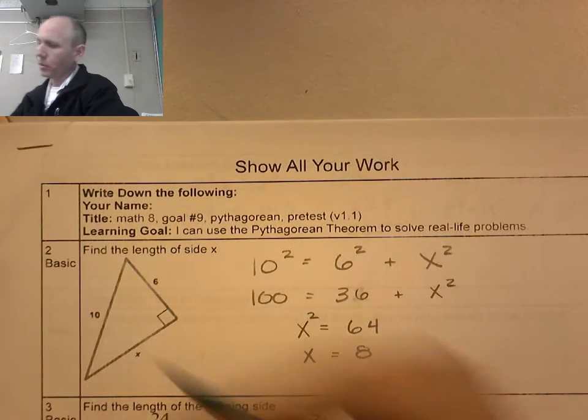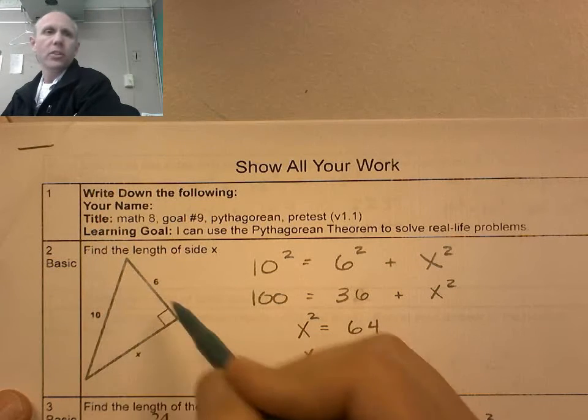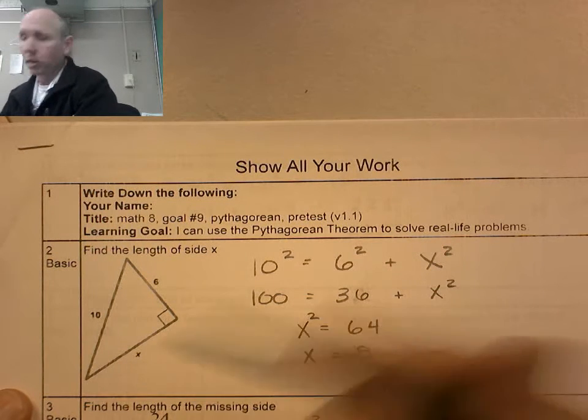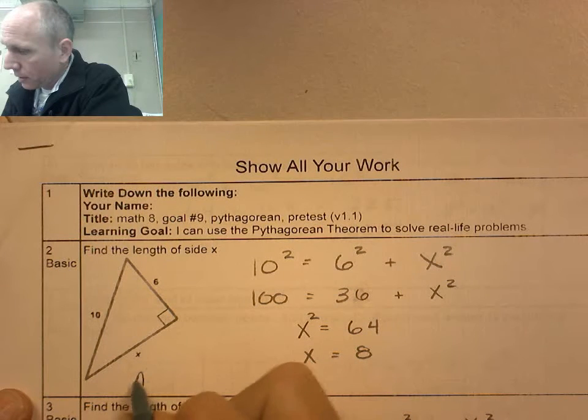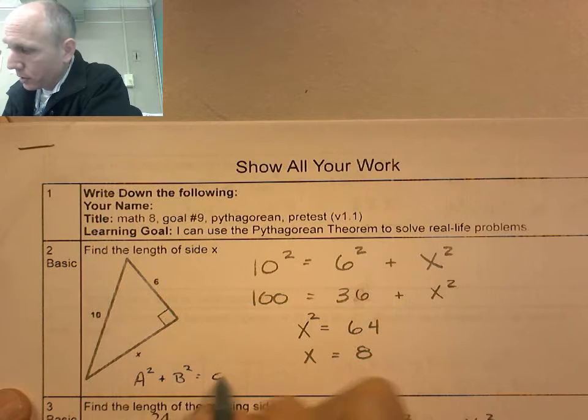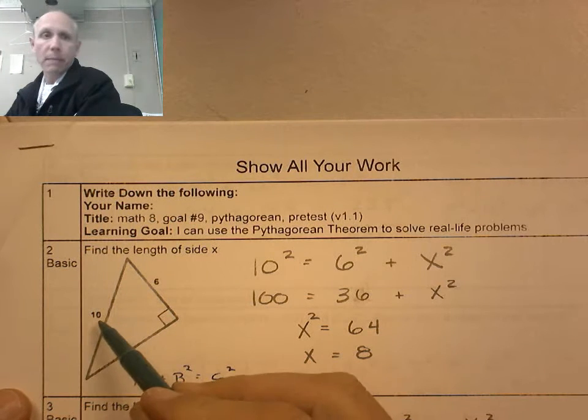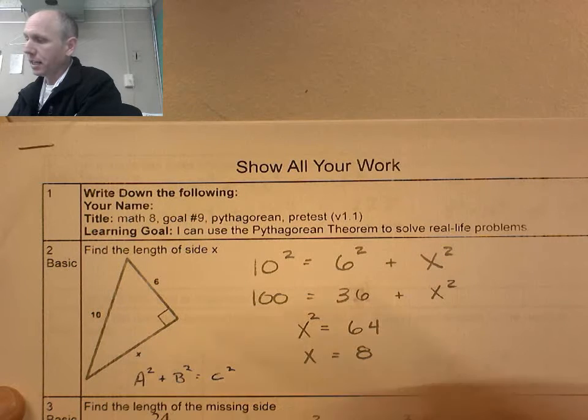Alright, Pythagorean Theorem. We use it for right triangles. This is a right triangle. If we have any of the two sides, we can find the third side using Pythagorean Theorem, which looks like this: A squared plus B squared equals C squared. So I'm given the hypotenuse right there.